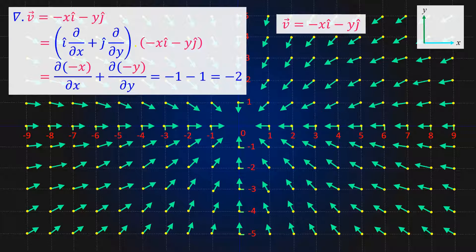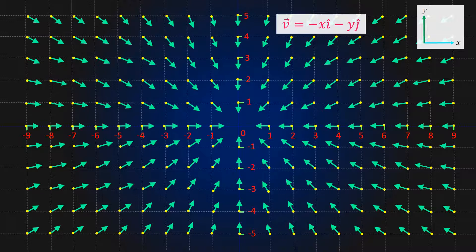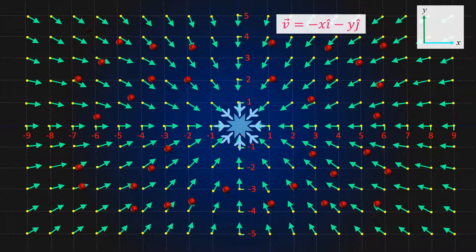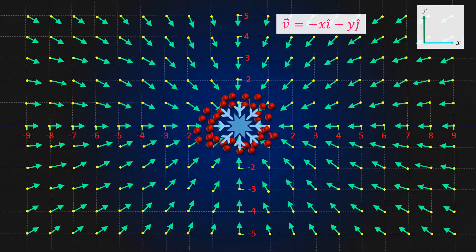In this case, if we consider a point at (0,0), it seems that all the vectors are pointing towards this point. It gives a feeling that this field is generating an inward flow and acting as a sink — just like cooling a gas causes the molecules to contract and move towards the inward direction.